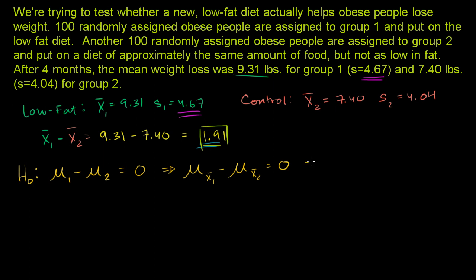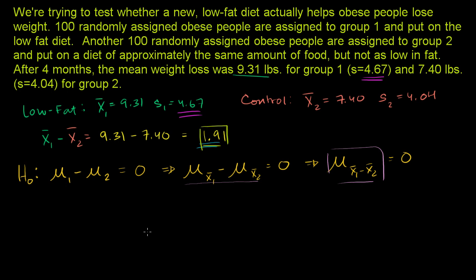Another way of saying it: if we think about the mean of the distribution of the difference of the sample means — which we focused on in the last video — that should be equal to 0, because this is the same thing as the population mean statement. So that is our null hypothesis.